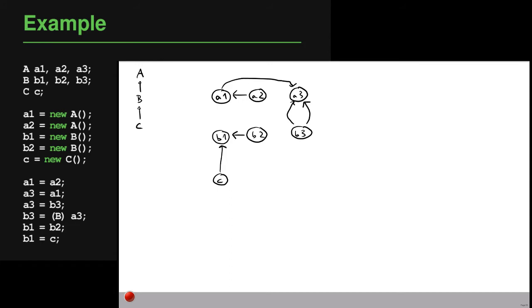Having this graph, the algorithm looks at constructor call sites to find what types variables may have, initially assigning the instantiated type to each corresponding variable. So a2 and a1 initially have type a, b2 and b1 have type b, and variable c has type c.